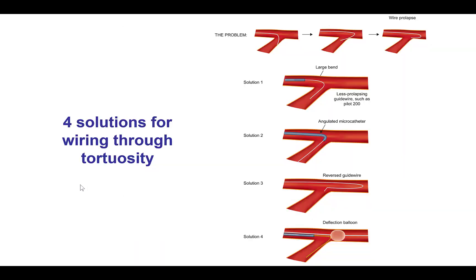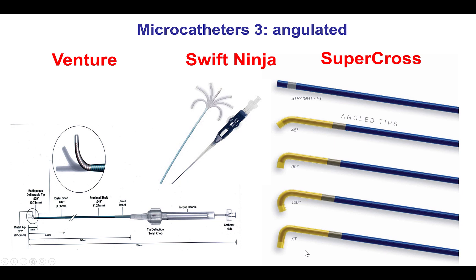We decided to go retrograde, but the challenge here was going retrograde through the SVG touchdown. The ways to do that is to use different wires with different bends, using angulated microcatheters, use the reverse guide wire technique, or use a deflection balloon to go around the bend.